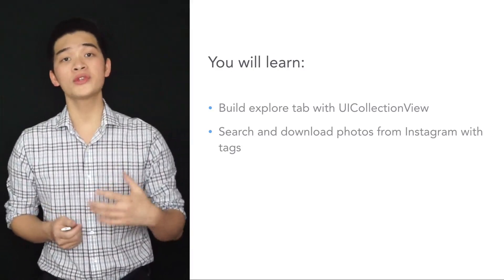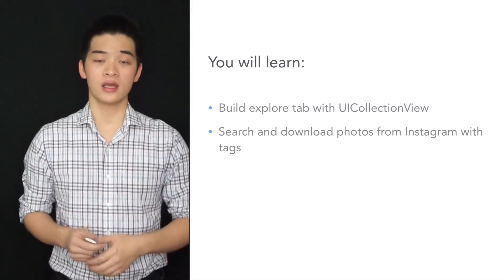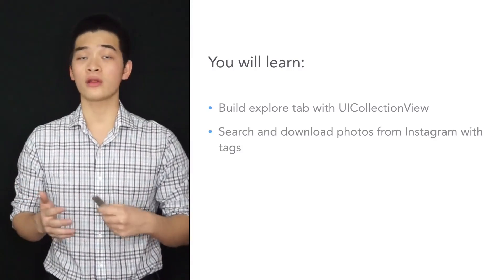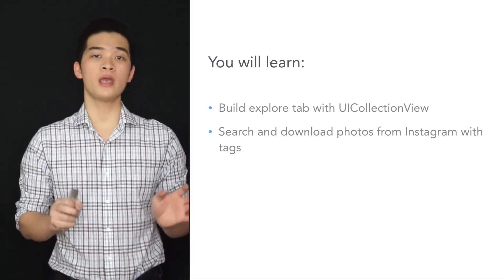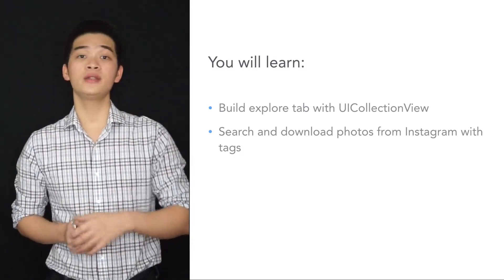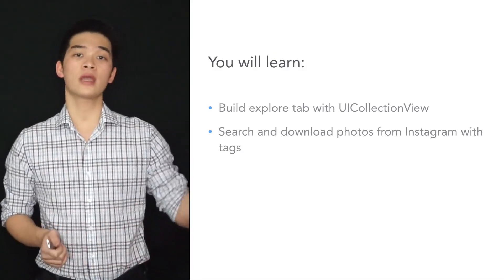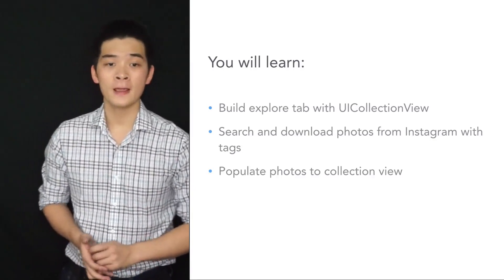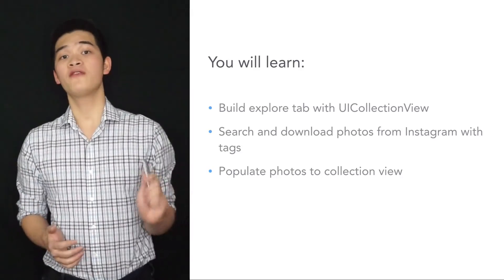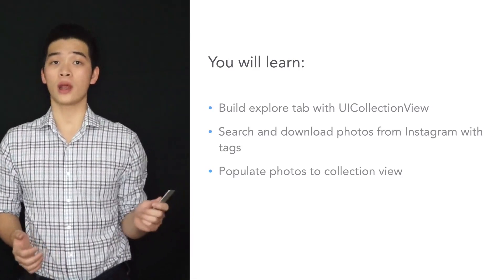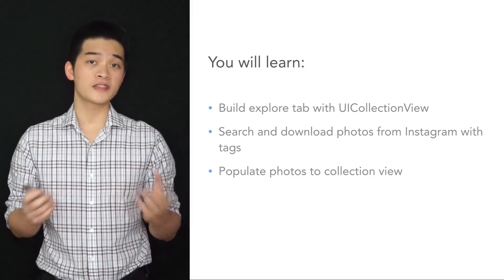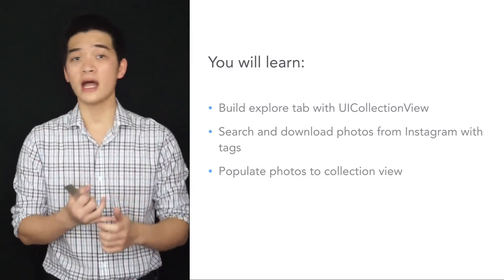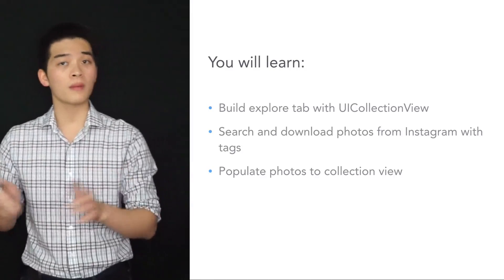We will learn how to search and download data, download photos from Instagram. The user will be able to enter some text into the search bar so that we can download all the photos from the text into our app. Next, we will learn how to populate the photos that we download from Instagram back to our collection view. There are a lot of techniques around this, including delegate methods and data source methods.